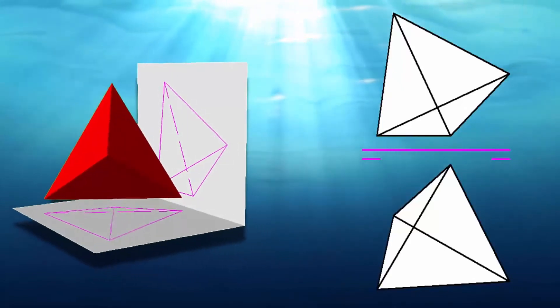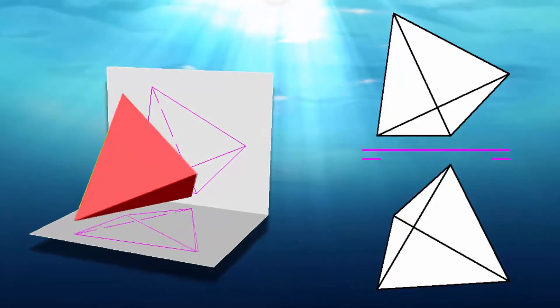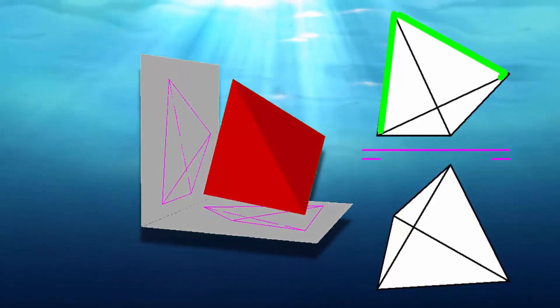These are the projections of a tetrahedron. In the front we'll outline these lines, and in the top view are these other.